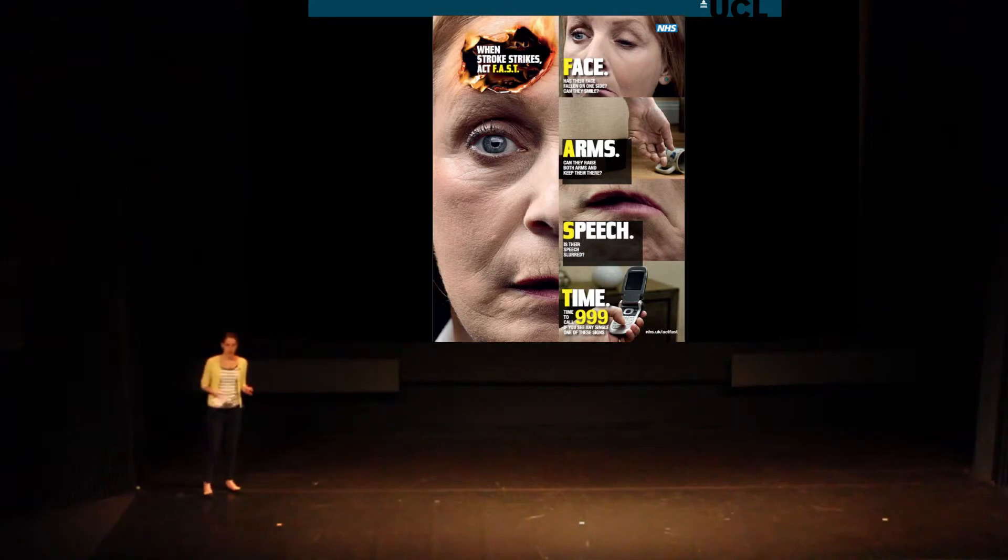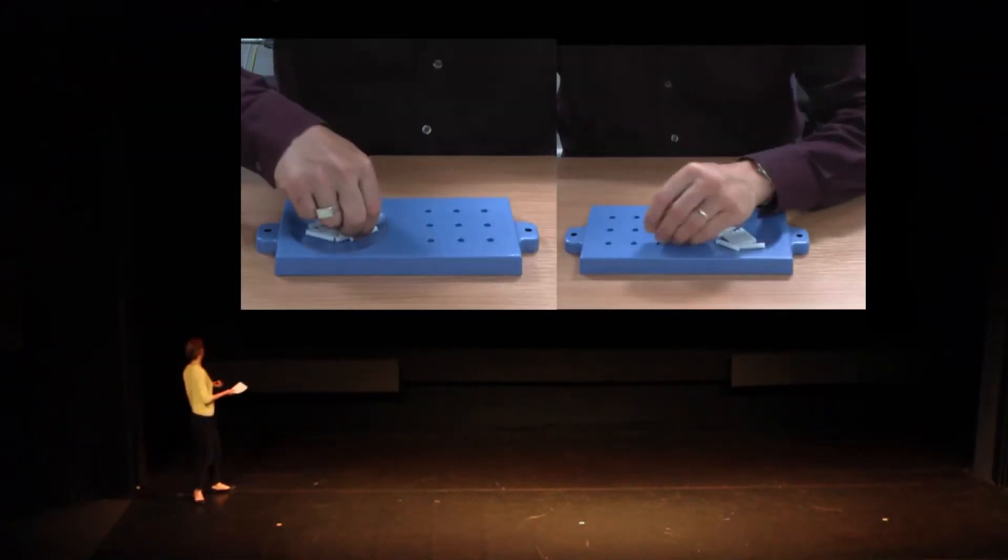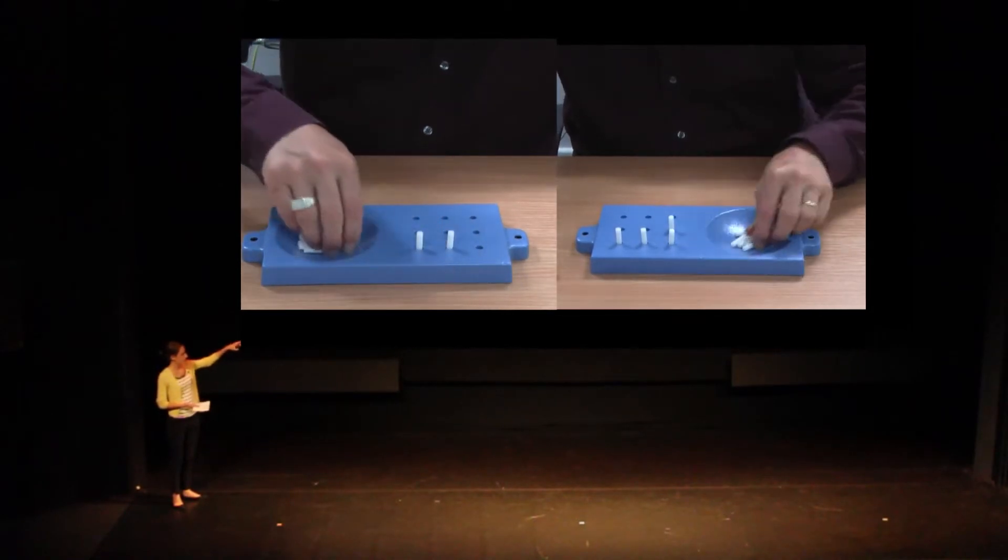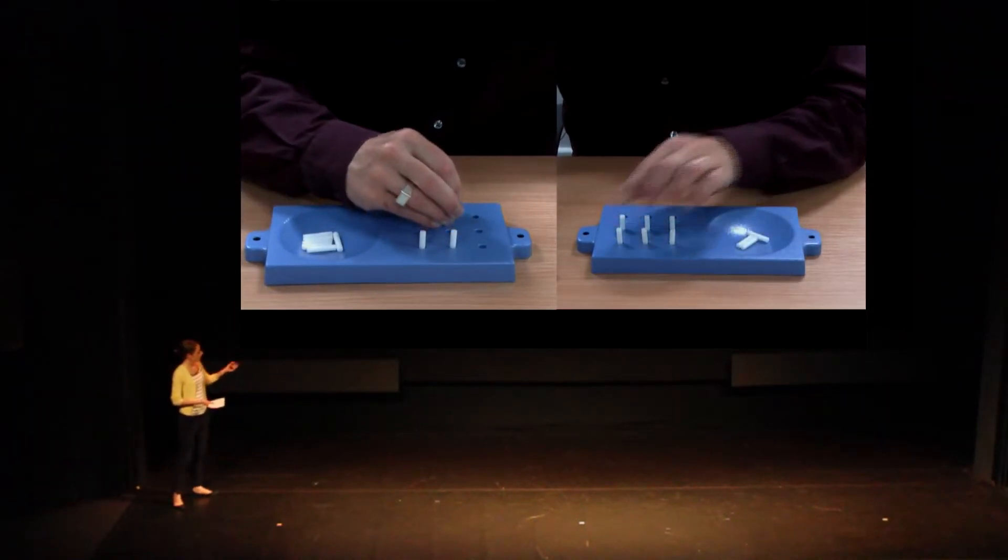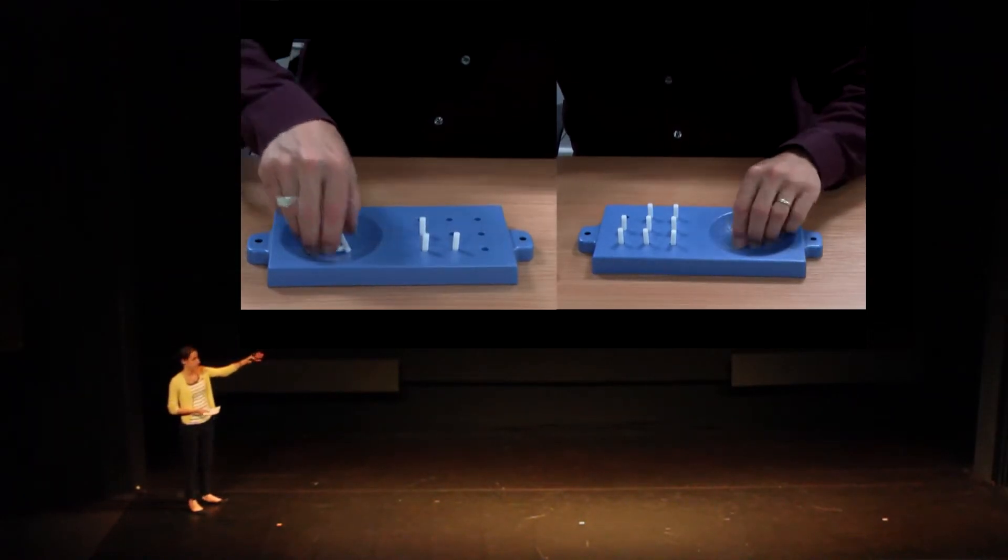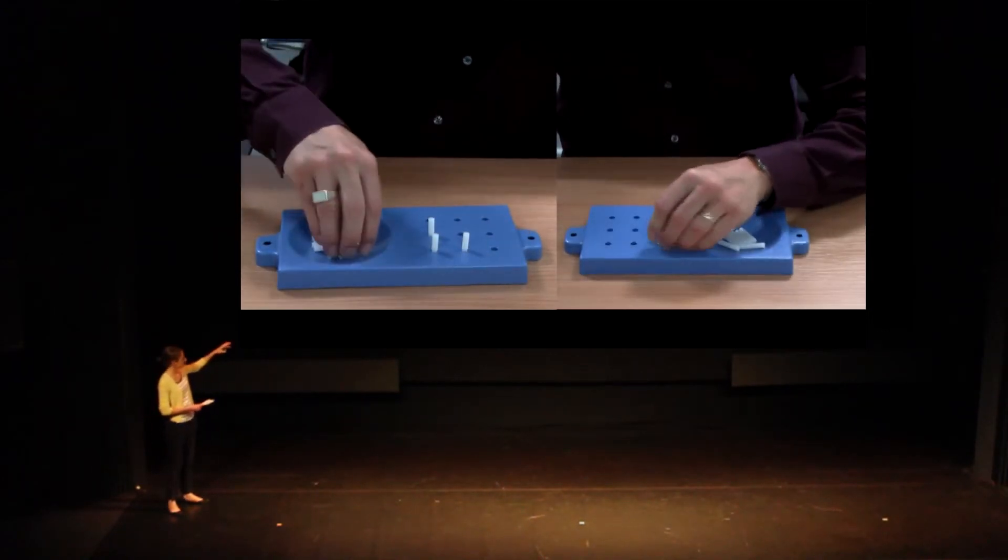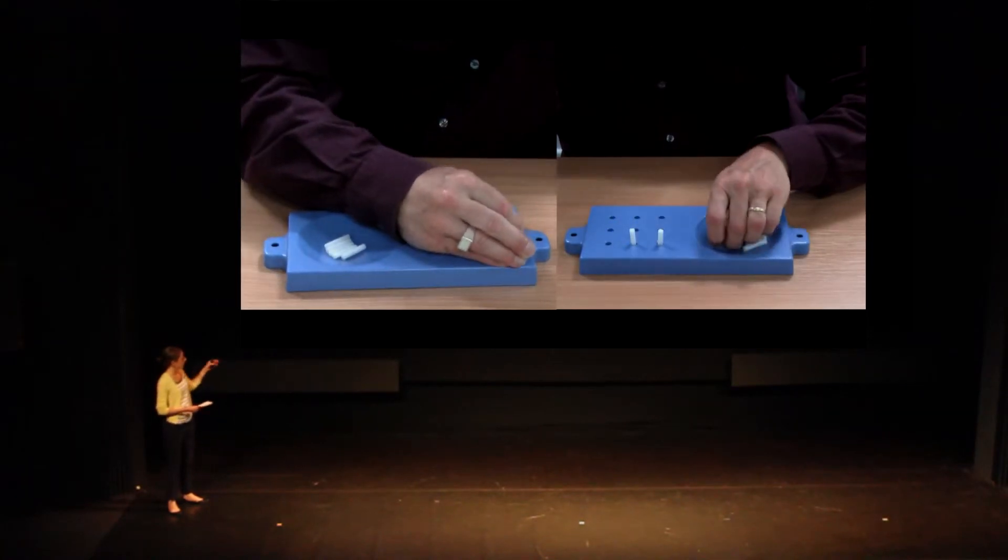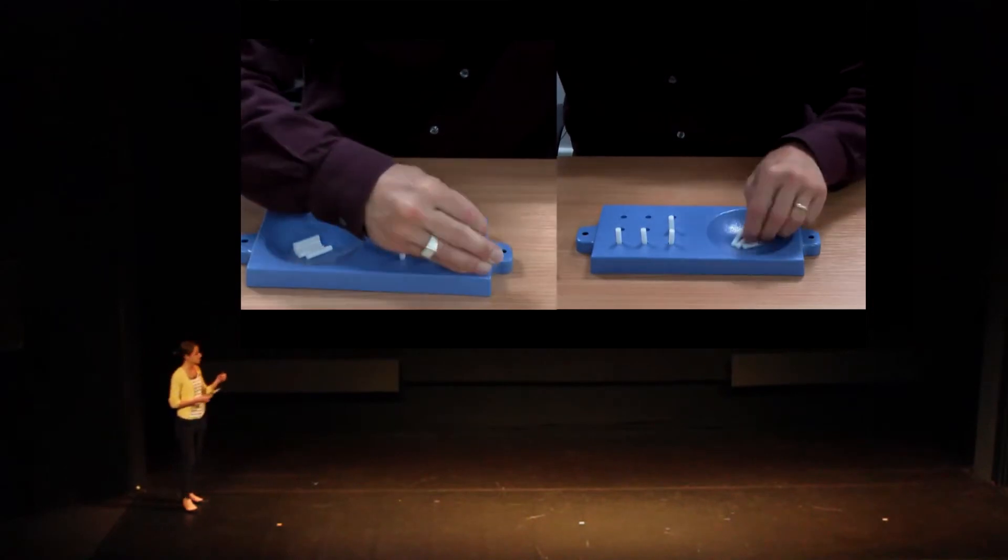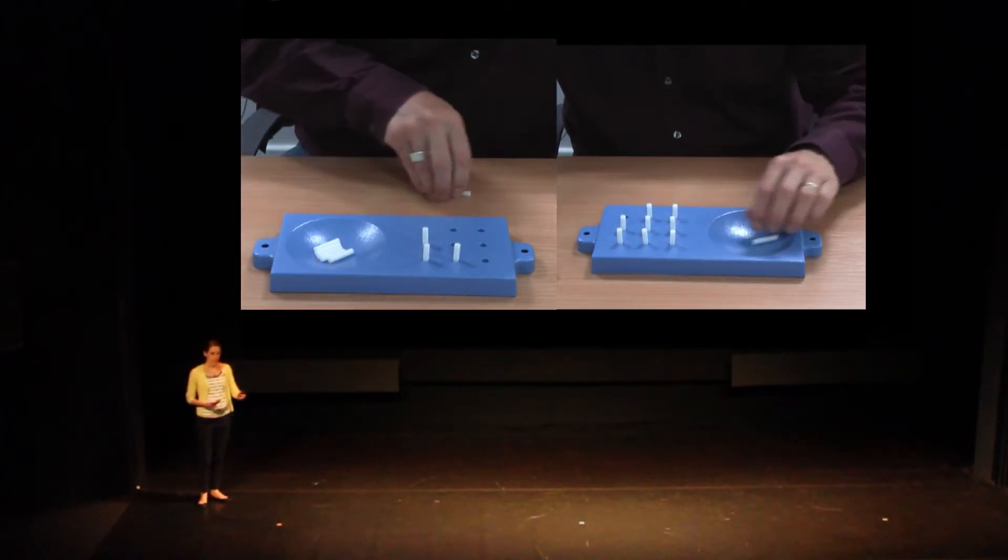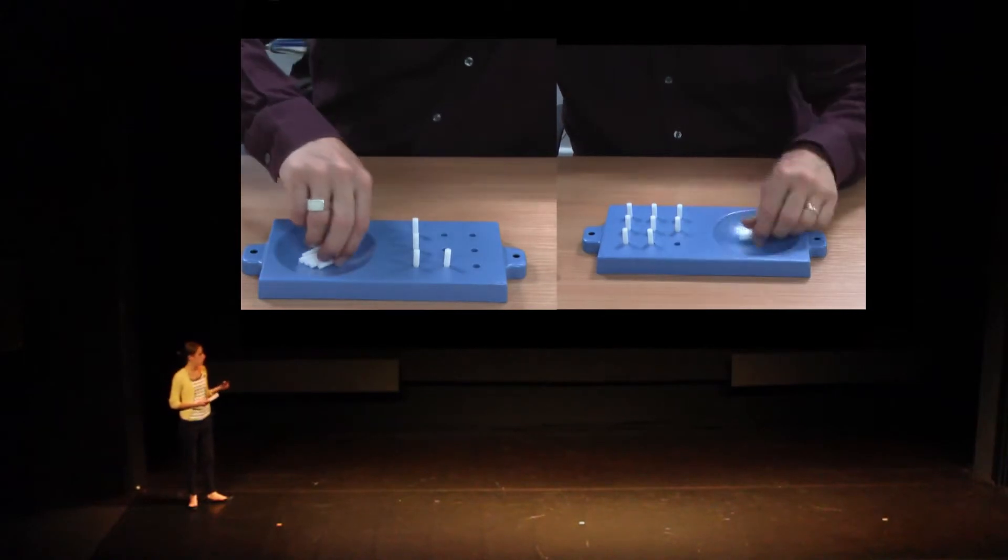We look at movement after stroke and how people recover their movement using brain imaging techniques. We also measure this using various behavioral tests. This is a video of one of our patients performing the 9-hole peg test. You can see with his left hand he's performing the task as normal. But his right hand is a bit affected by stroke. He's still able to do the task but it's a lot slower. His fingers are a lot more stiff and he finds it difficult to move them individually. This is very common after stroke.